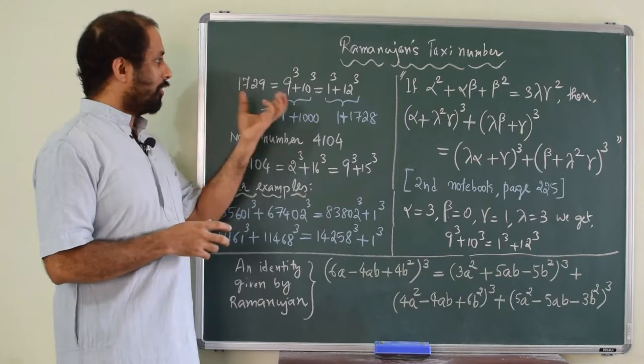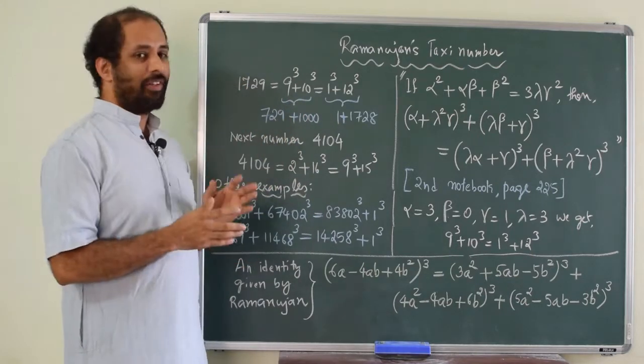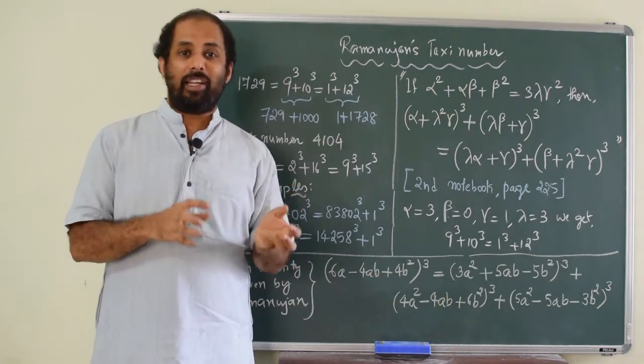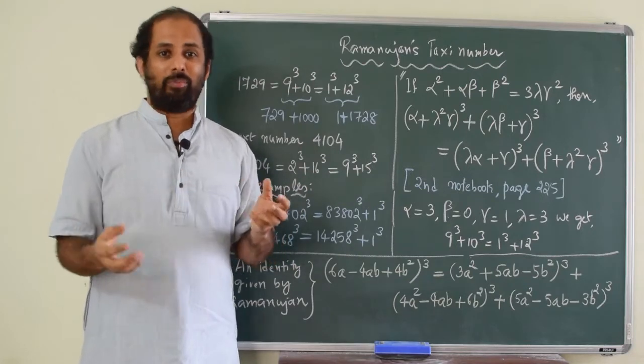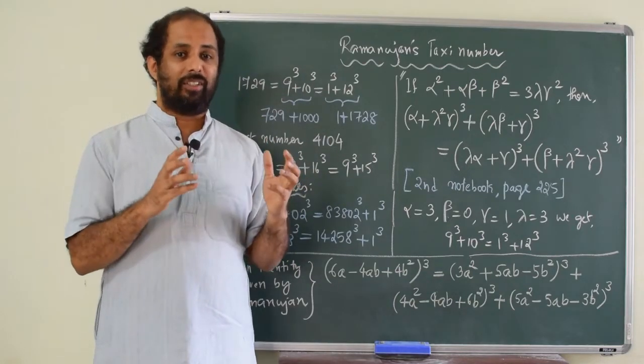So, when he was going through these kind of interesting numbers, he found the property of 1729 and he had noted down in his notebook. Then there was another mathematician called Jay Vallis, who had written some more numbers which exhibit this property. So, that also Ramanujan did not know anything about it.